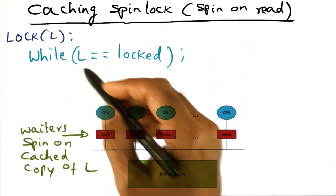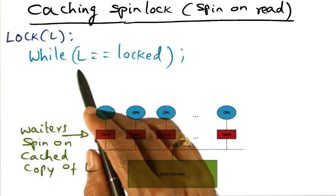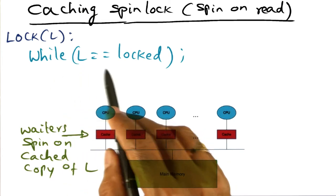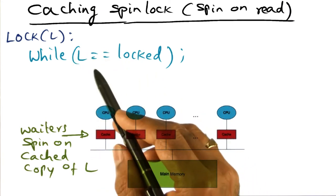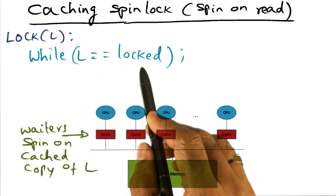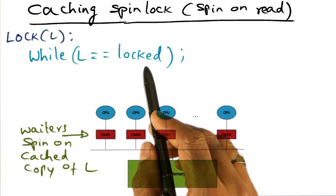The idea is that the lock algorithm, the first thing it's going to do is go and do the check on the memory location to see if it is locked. So this is a normal atomic read operation that is being done, not a test and set operation.